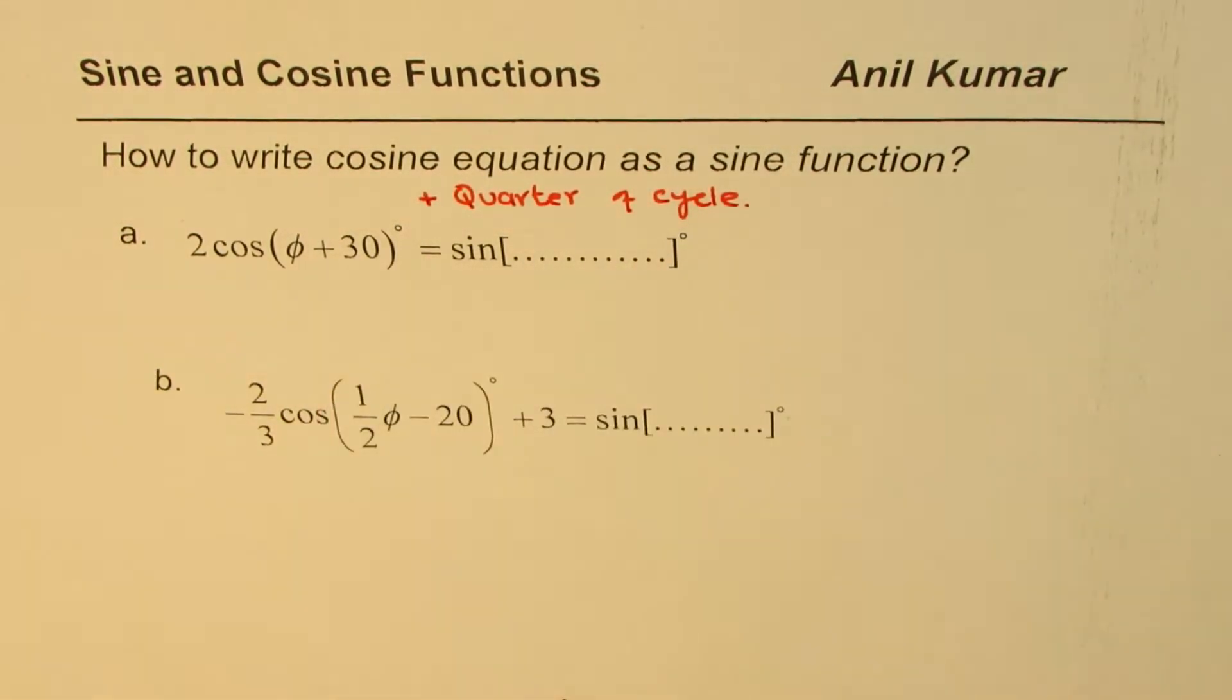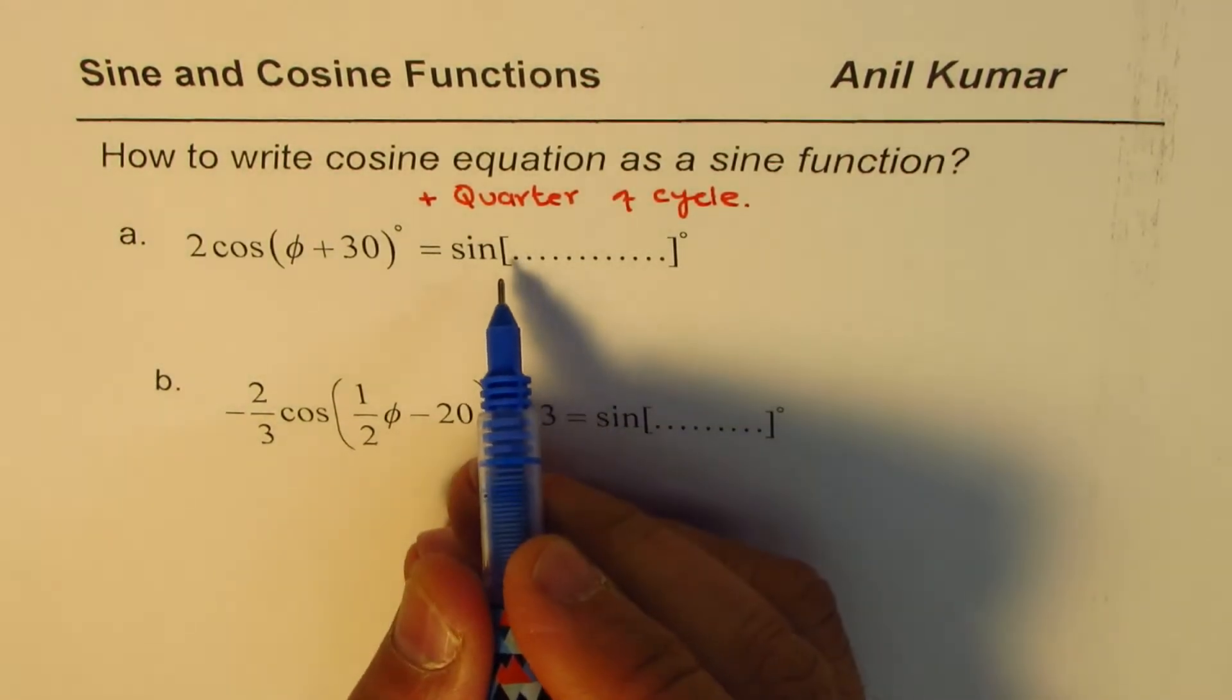So let's first find the time period and then we'll find one-fourth of the time period. Add that up to write down the cosine function.